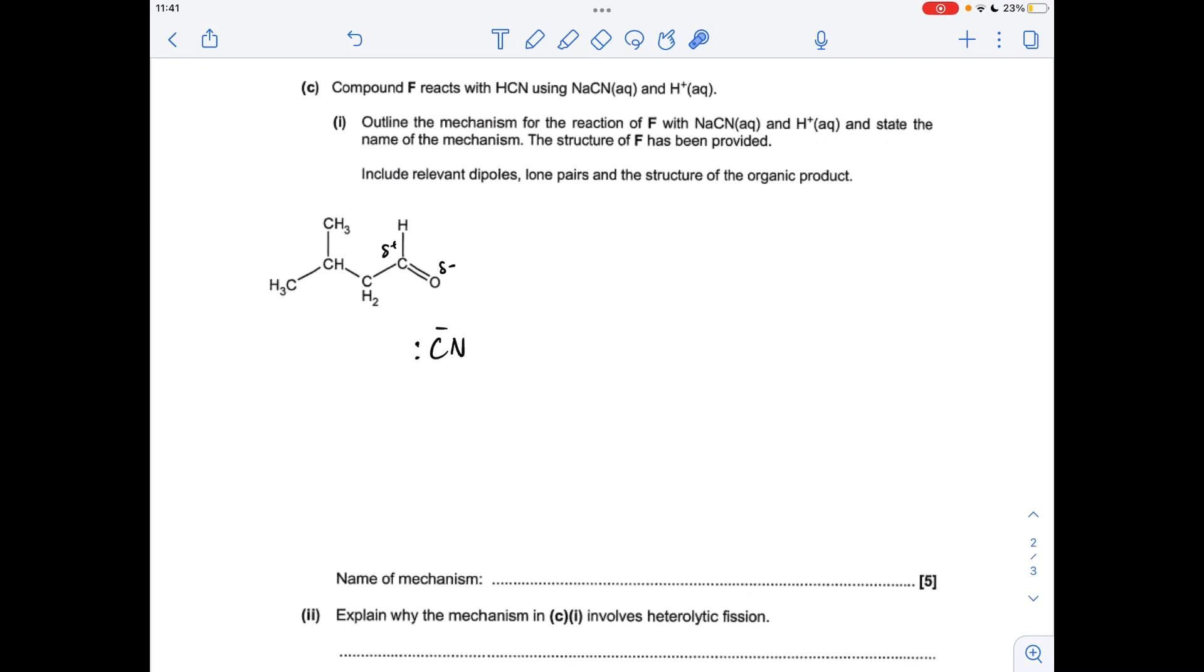Part C, the mechanism. The first thing we do is bring in the cyanide ion from the HCN, put the dipole across the C double bond O, and we take a curly arrow from the lone pair on the carbon to the slightly positive carbon in the carbonyl group. That's going to repel the pi electron pair in the C double bond O completely onto the oxygen.